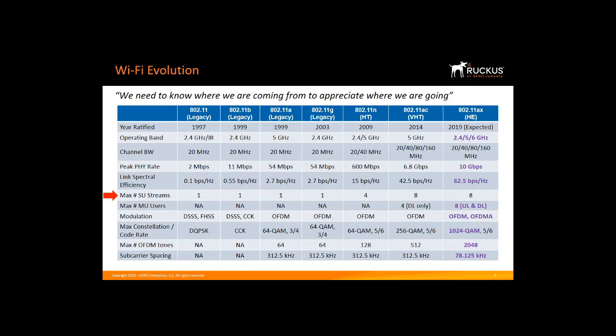So even though I have eight streams on my AP, a client may only be capable of two streams. So the multi-user MIMO concept came along with the idea that if the AP can transmit eight streams, why limit it to transmitting all eight streams to one device? We can break those eight streams into four groups of two streams and send them to multiple two-stream devices, such as a smartphone. 11ac allows the AP to talk to four devices at the same time. 11ax extends this to eight devices, and supports multi-user MIMO in both the upload and downlink directions.